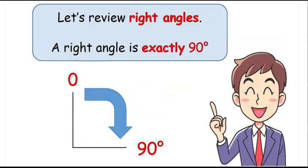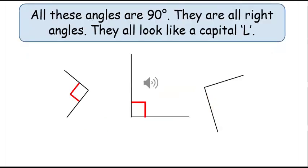Let's review right angles. A right angle is exactly 90 degrees. All these angles are 90 degrees. They are all right angles. They all look like a capital L.